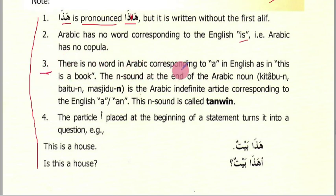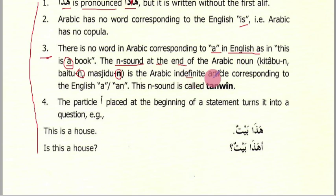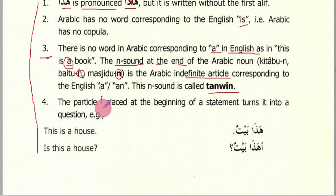There is no word in Arabic corresponding to 'a' in English, as in 'this is a book'. We don't have a separate word for the indefinite article 'a' or 'an'. Instead, we have the tanween — the sound at the end of the Arabic noun, like 'kitabun', 'baytun', 'masjidun'. This tanween is equivalent to the English 'a' or 'an'.